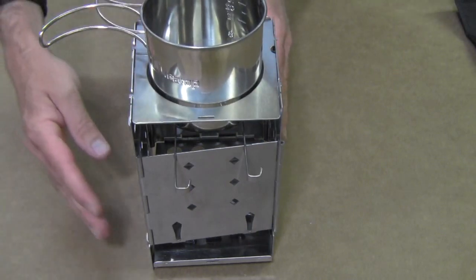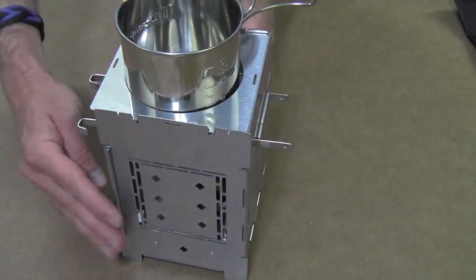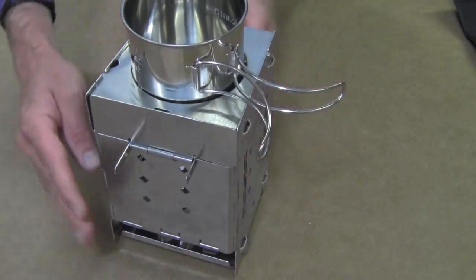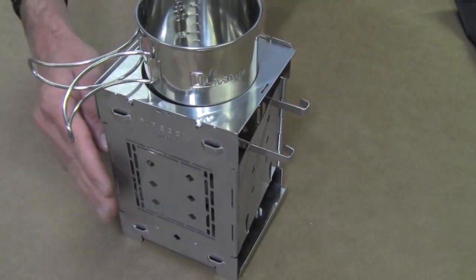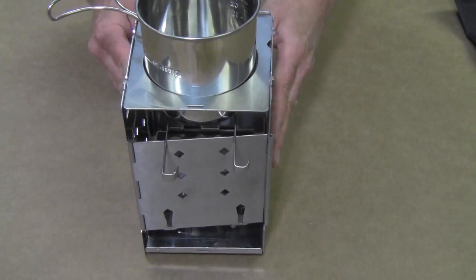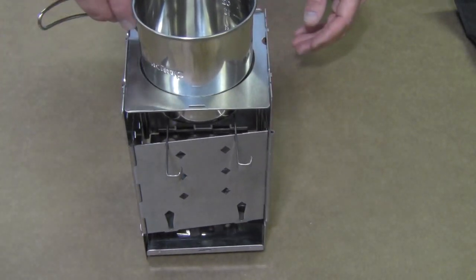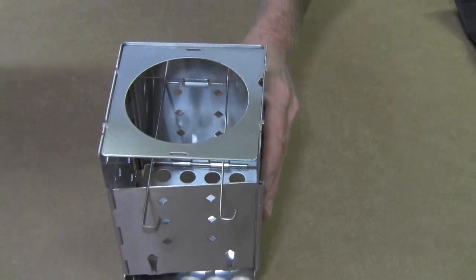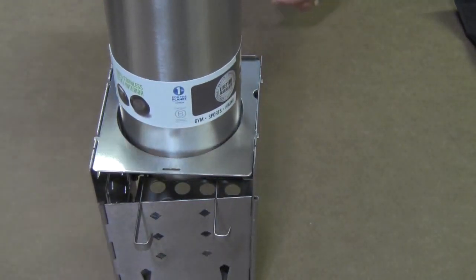You use a space saver cup and then once again it's completely boxed in, protecting that burn chamber from the wind and really containing the heat around your space saver cup or a stainless steel water bottle.